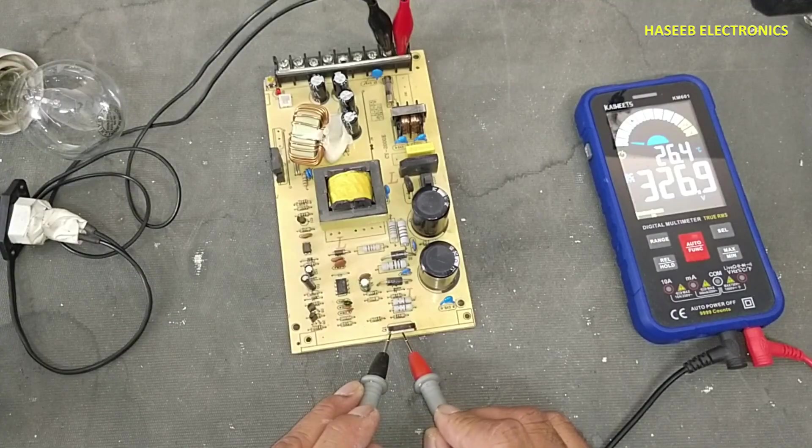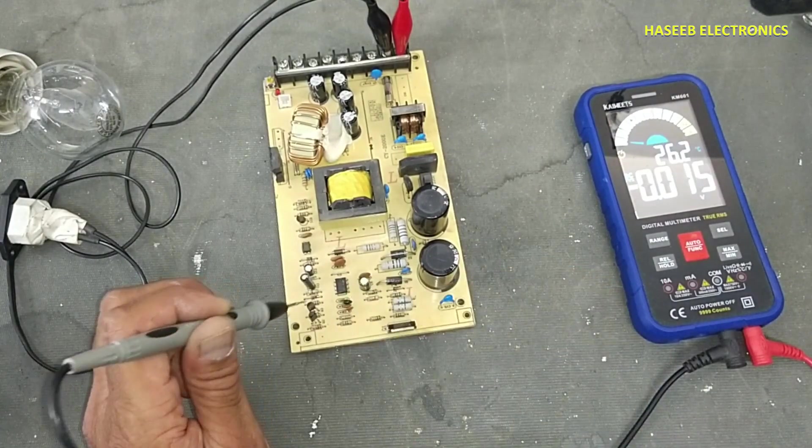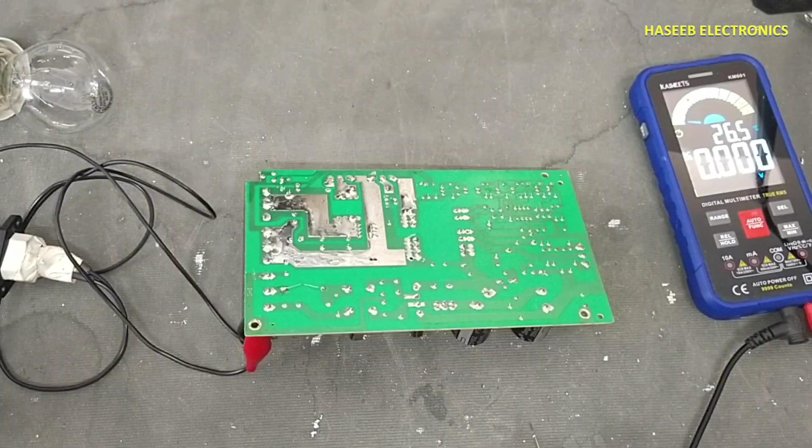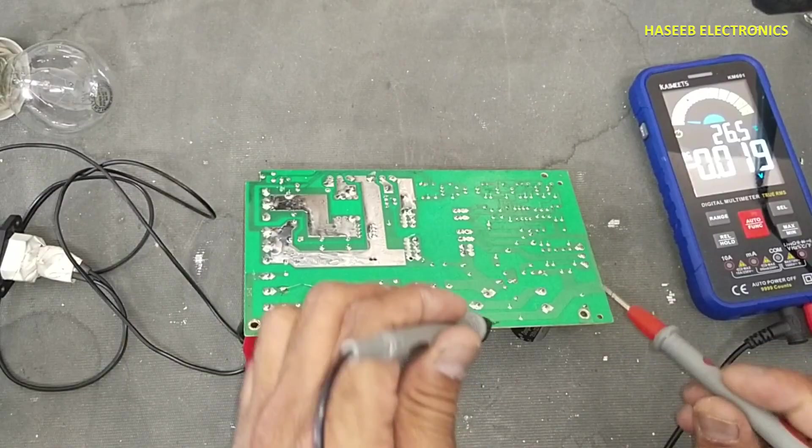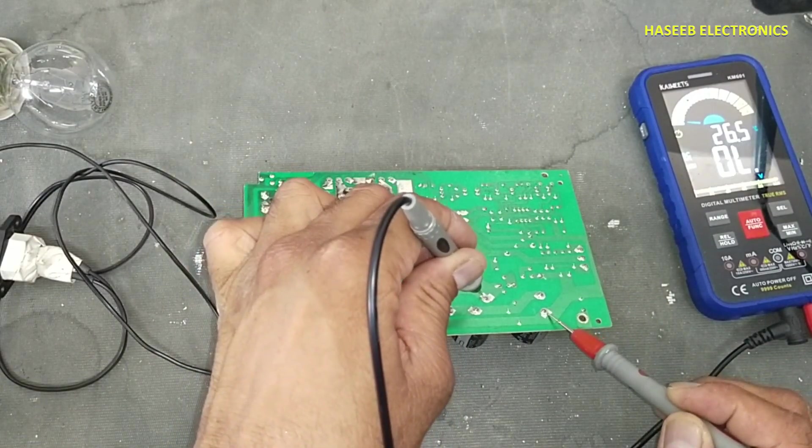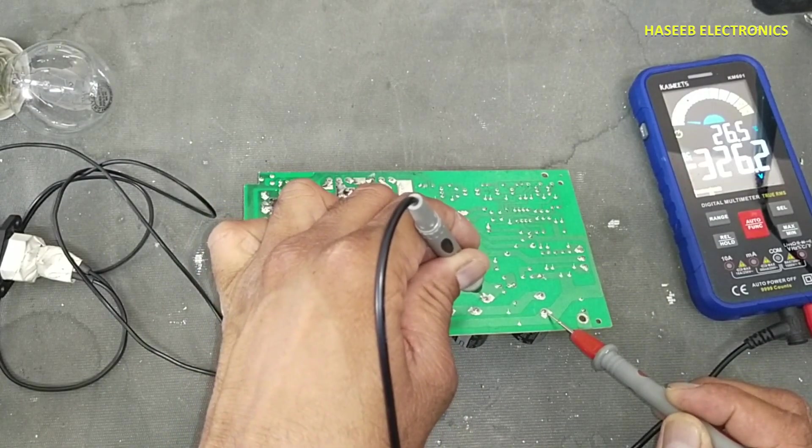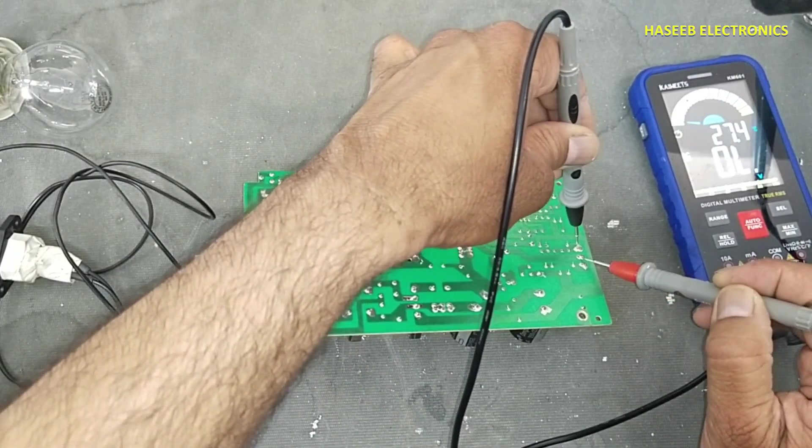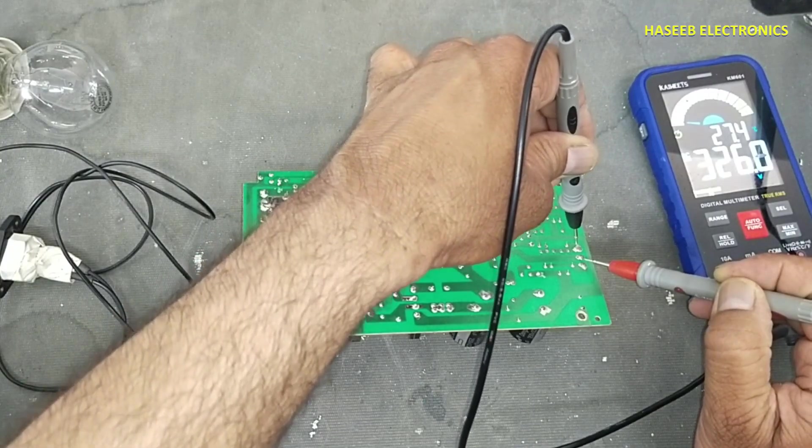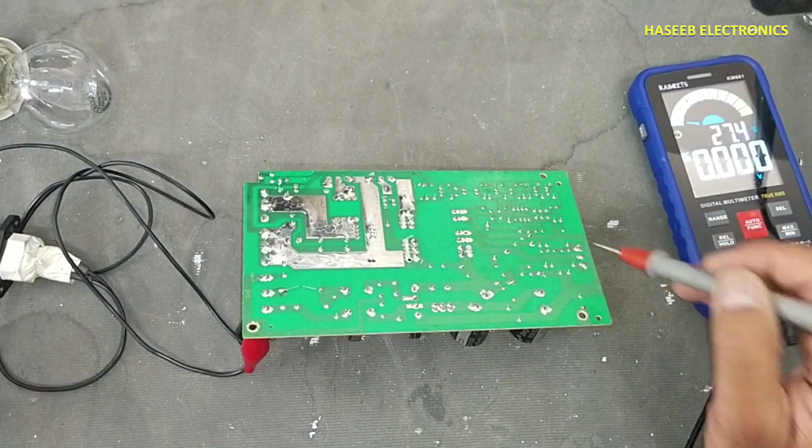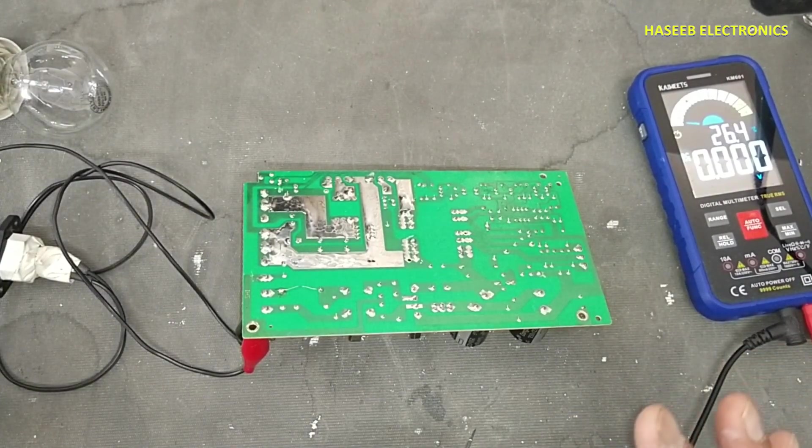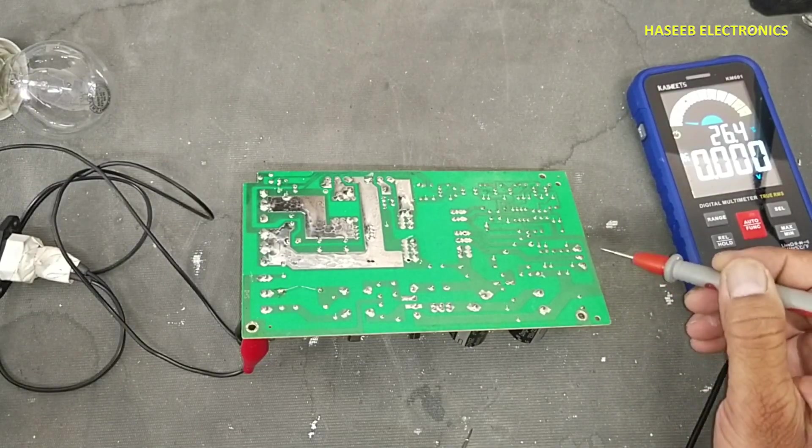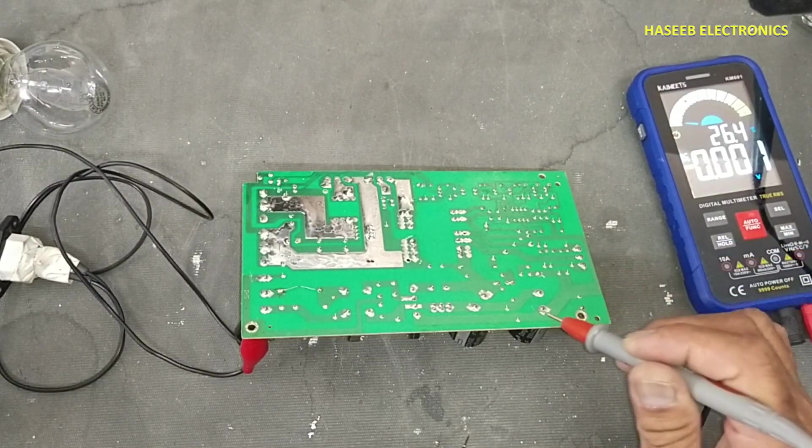MOSFET has voltage but this IC is not receiving power now. So we need to trace the circuit. Now if we check DC rail voltage, 326 volt. Check voltage drain to source, the same voltage that is present at drain to source. That means the MOSFET is blocking voltage. It is not switching. When it will switch there will be a difference between this voltage and this voltage.